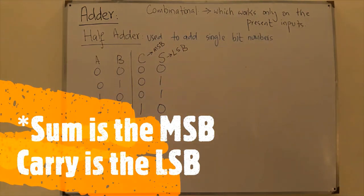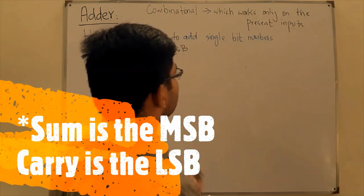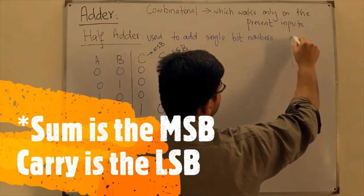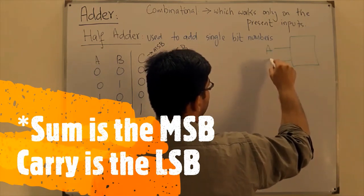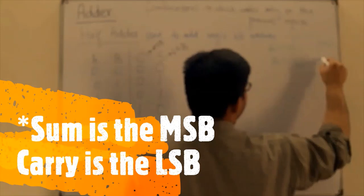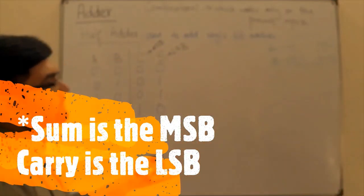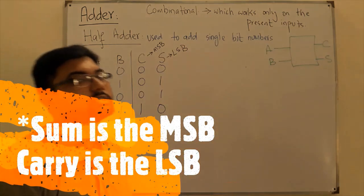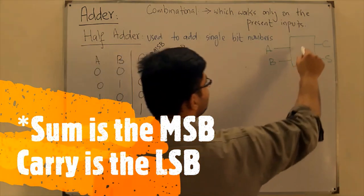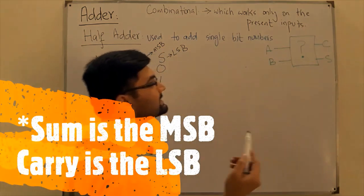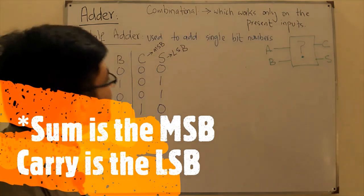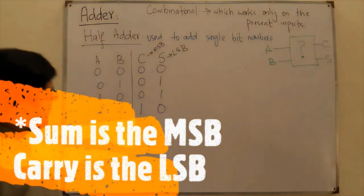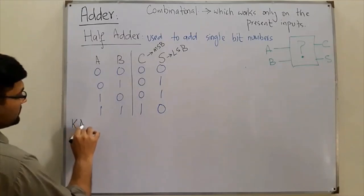We represent the half adder as a box: you give it inputs A and B, and it gives you at the output the carry and the sum. Now, what is inside this box? What is the circuit inside? To find that out, we use a Karnaugh map.